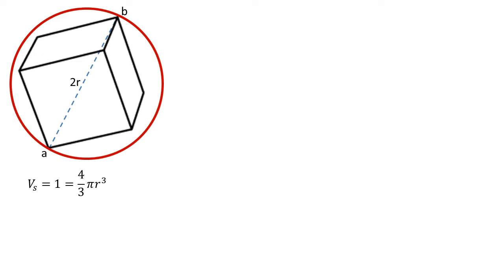So rearranging 1 = 4/3 πr³, we get that r³ equals 3/(4π), hence r equals (3/(4π))^(1/3), so the cube root.